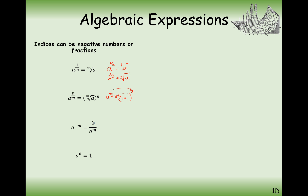When we have a negative power, we treat that the same as doing 1 over a to the power of m — the reciprocal of a to the power of m. The power stays on the a, and the negative means we write it as 1 over. So a to the power of minus 2 is 1 over a squared. Also, anything to the power of 0 is 1.